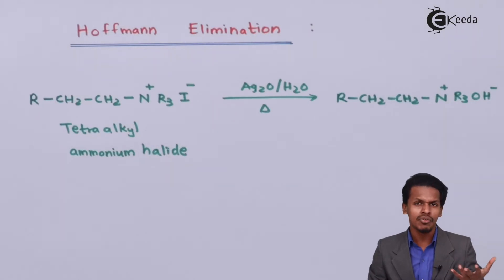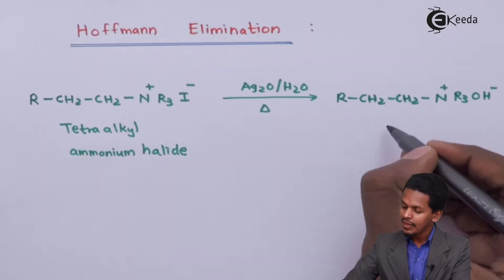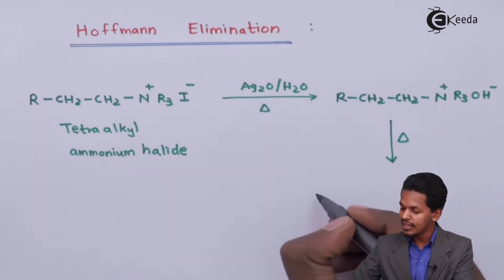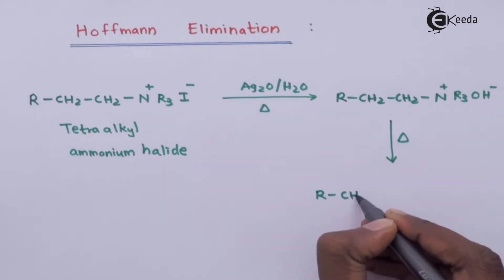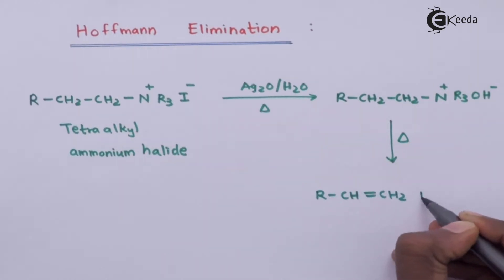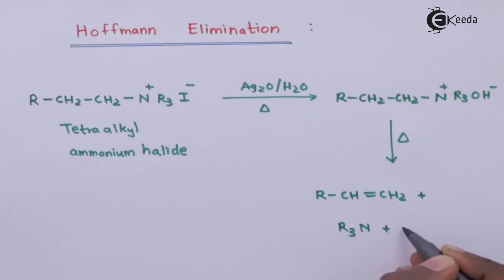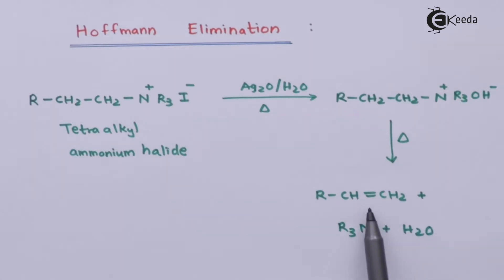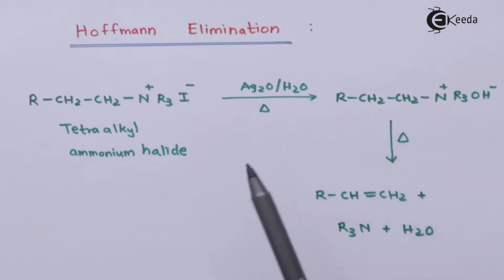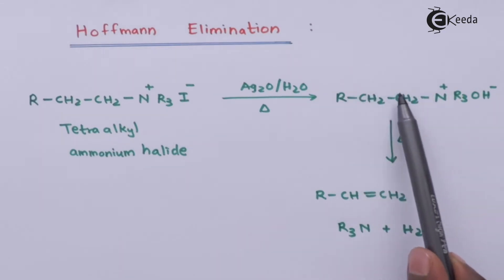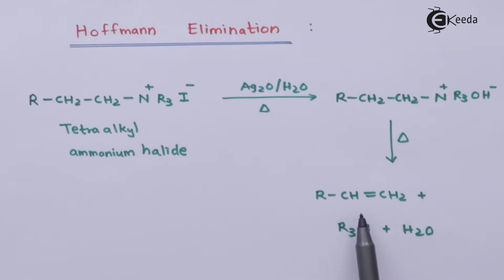The reaction doesn't stop there — we must produce an alkene or unsaturated hydrocarbon. So we heat the tetraalkyl ammonium hydroxide product. The main product obtained is RCH=CH₂, along with byproducts R₃N and H₂O. This is a beta elimination, where the alpha carbon and beta carbon are involved, producing the alkene.